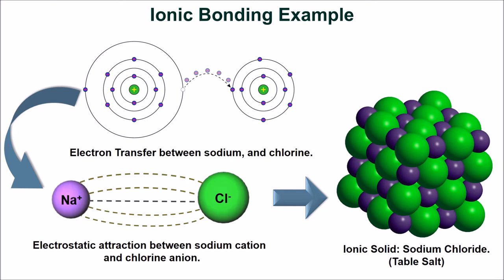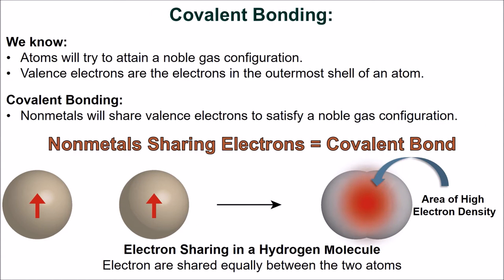Simply put, ionic bonding is the electrostatic attraction between positive and negative ions. A covalent bond is equal electron sharing between bonded nonmetal atoms. Instead of transferring electrons, bonded nonmetals share valence electrons to achieve a noble gas configuration. In a covalent bond, the electrons are shared equally between the bonded atoms. Sharing electrons allows two bonded hydrogen atoms to attain the nearest noble gas configuration of helium, with the area of highest electron density between them — each hydrogen now has access to two electrons.